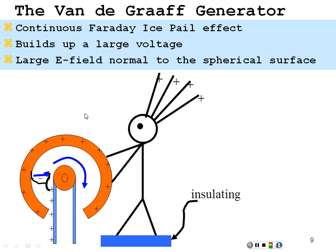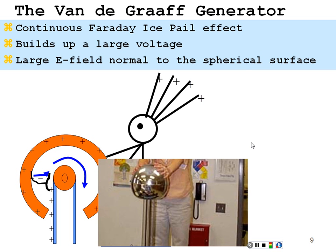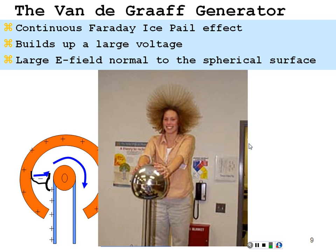Here's a demonstration — easier to show if you have hair. Here someone is touching the Van de Graaff generator. They're insulated from ground so they're part of this charge, and it's gone to the ends of their hair, making it stand up on end.